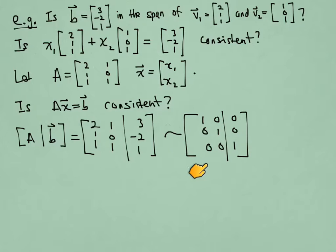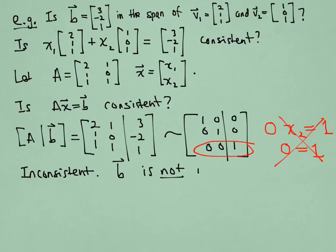And if we interpret this the correct way, we'll see that this is, in fact, an inconsistent system. And the key here is in this third row. It's telling me that 0 times x2 should equal 1. In other words, 0 should equal 1. And that can never happen. So the equation is inconsistent. And that tells me B is not in the span of those two vectors, V1 and V2.